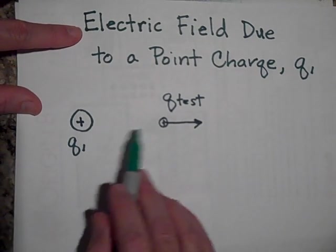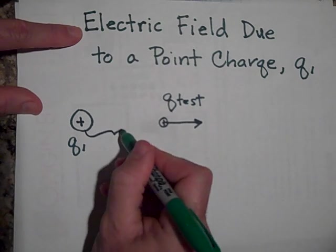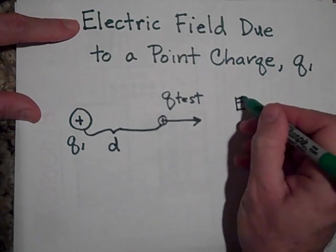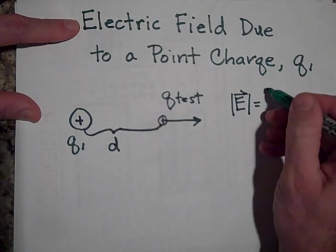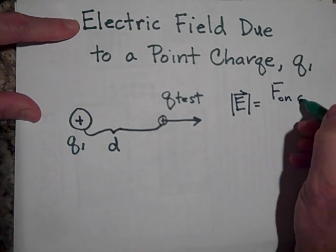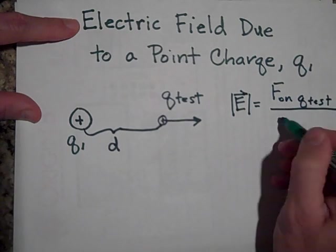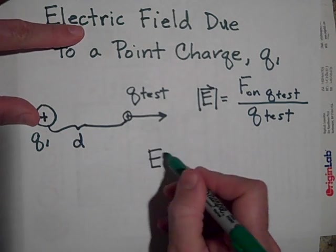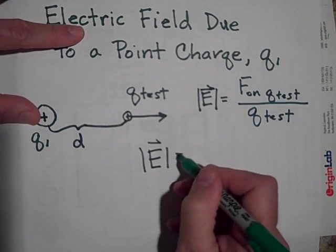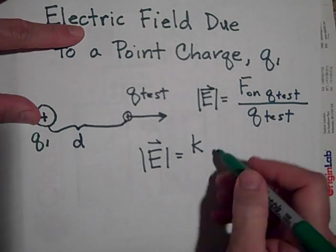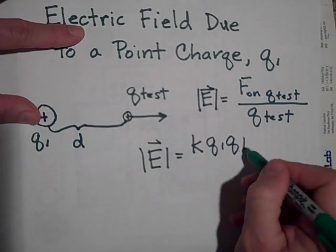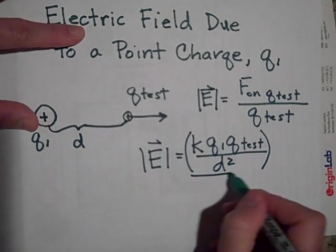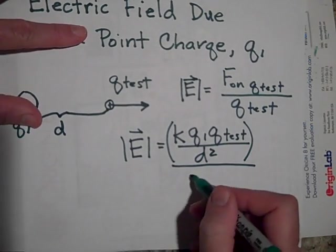And if I wanted to know how big that field was right there, a distance D away, then I would just use my equation. The electric field's strength is just going to be the force on the test charge divided by the test charge. So let's see, the field would be, the strength of the field is going to be the charge on the test charge, that's going to be K rather, Q1, Q test, all over D squared, that's Coulomb's law. Coulomb's law only applies for point charges, divided by Q test.